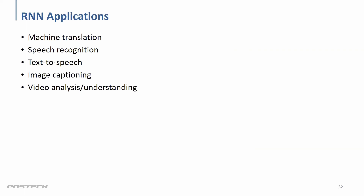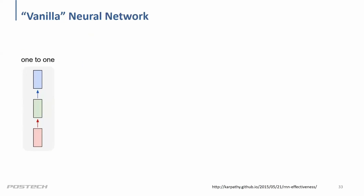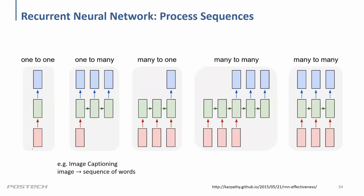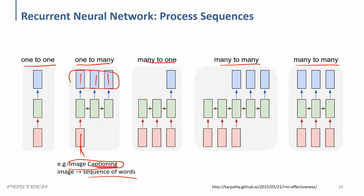RNN has a lot of applications: machine translation, speech recognition, text-to-speech, image captioning, video, and more. There are different structures — one-to-one, one-to-many, many-to-one, and many-to-many. For one-to-many, like image captioning, you show a single image and the task is to generate a sequence of words to explain it.